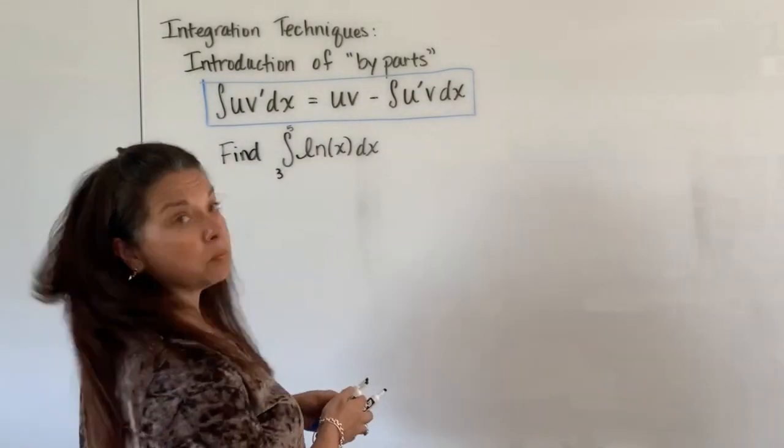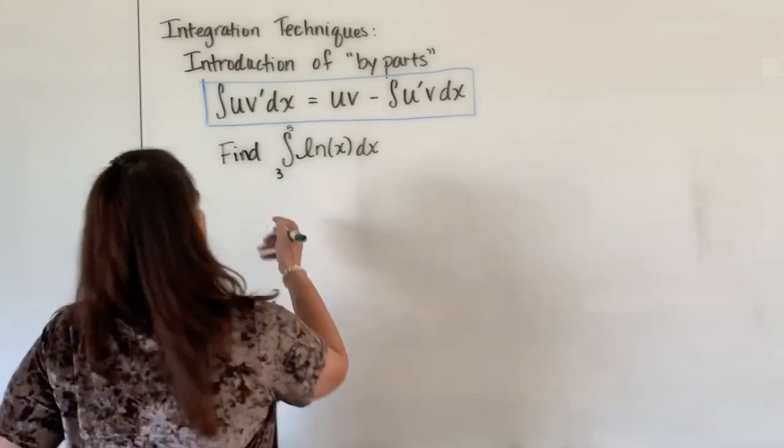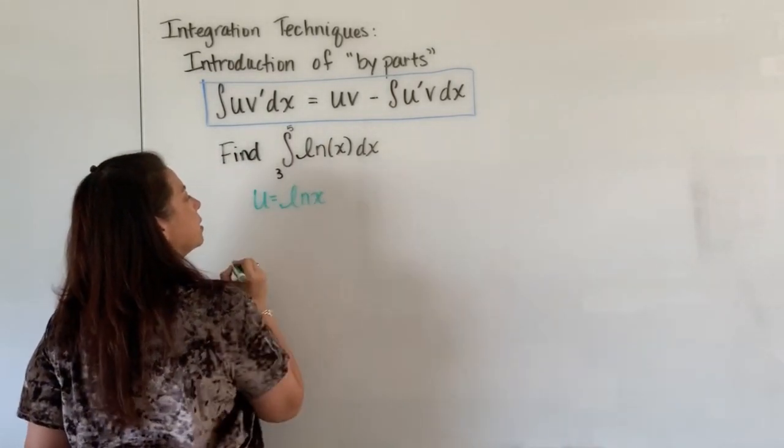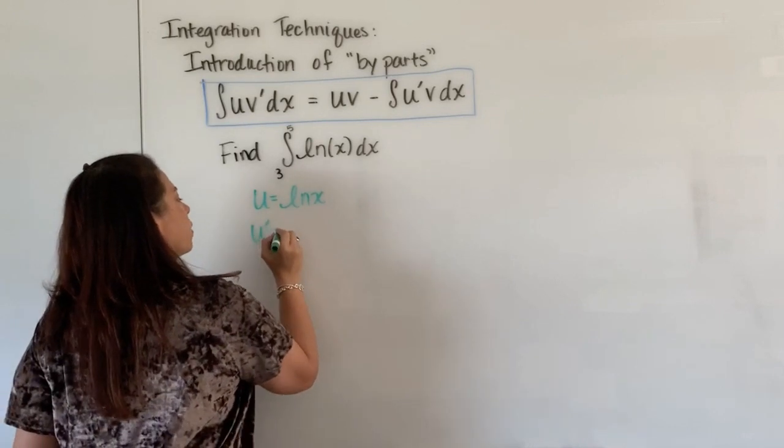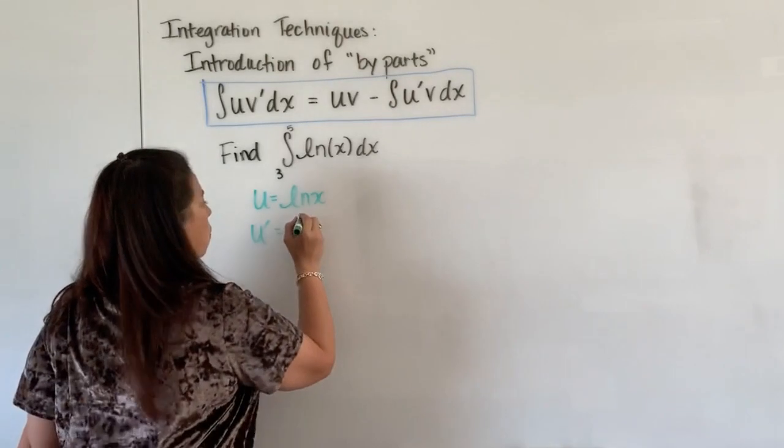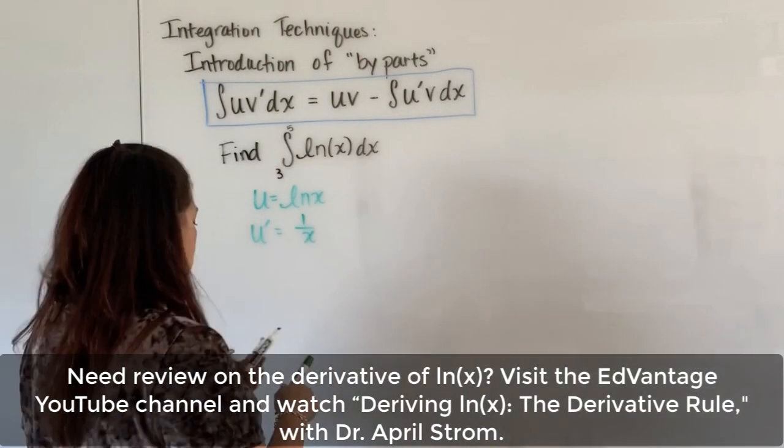So let's let u be natural log x. Let's start there. So if u is natural log of x, we can find what u prime is. Well the derivative of natural log x is just one over x.